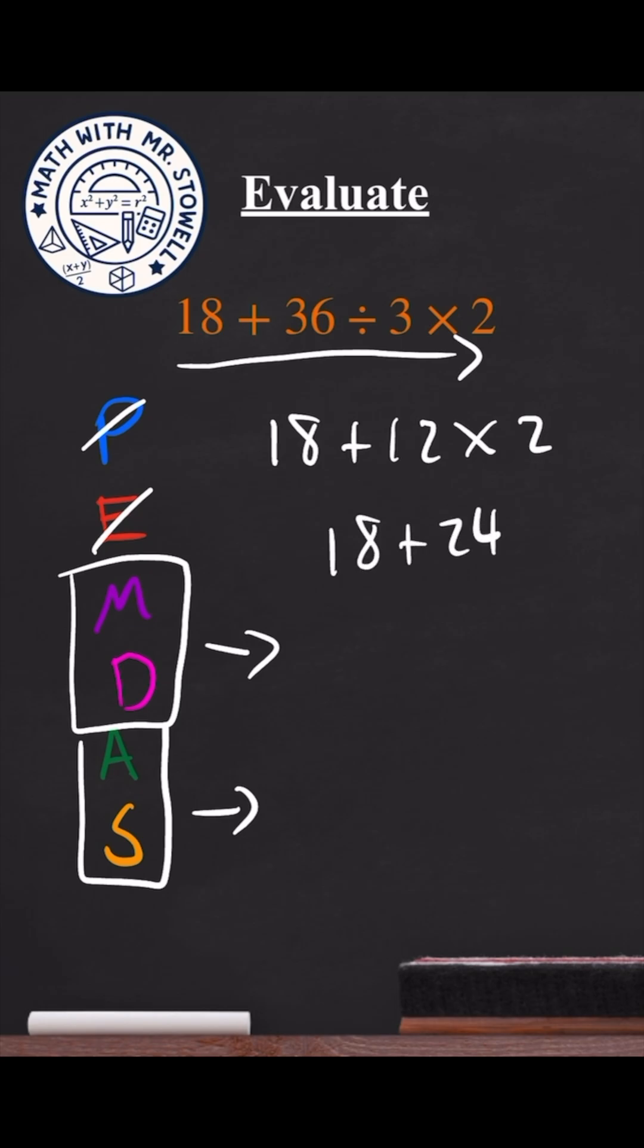And lastly, because we have no more multiplications, no more divisions, we just have an addition in there. We add these together, which gives us 42.